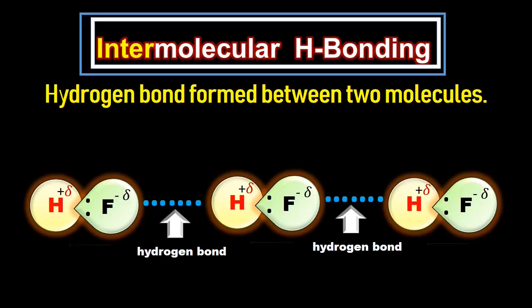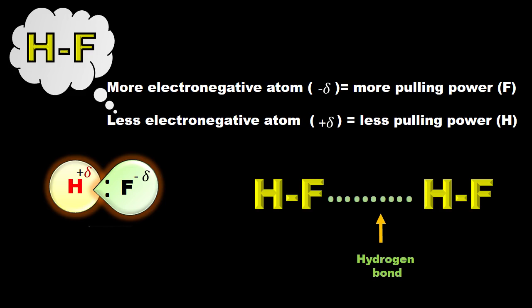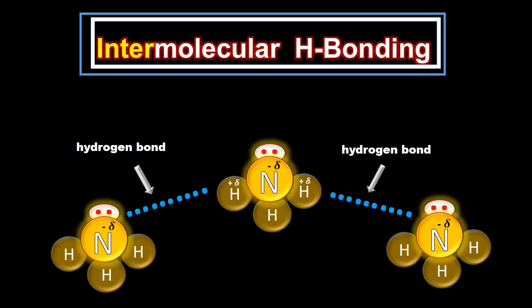Hydrogen fluoride molecules के दर्मियान जो hydrogen bond formation होती है उसे intermolecular hydrogen bond कहा जाता है, क्योंकि यह two molecules के दर्मियान hydrogen bond बना रहा है। Hydrogen atom जो already attached है highly electronegative fluorine के साथ, दूसरे molecule की तरफ attract होता है जिसमें highly electronegative fluorine atom मुझूद है जिसके पास lone pair of electron भी है। Ammonia molecules के दर्मियान hydrogen bond formation भी intermolecular hydrogen bonding कहलाती है — central ammonia अपने around two ammonia molecules के साथ hydrogen bond बनाता है।